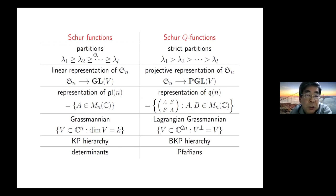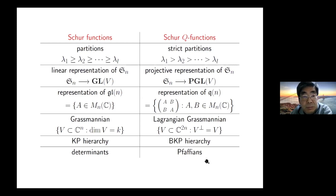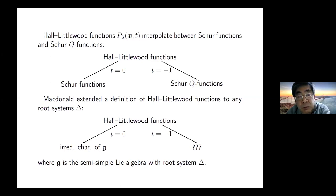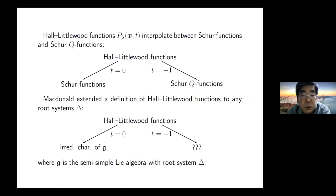The main tool for Schur Functions is the determinant, and the main tool for analyzing Schur's Q Function is the Pfaffian. Both Schur Functions and Schur Q Functions are obtained from the Hall-Littlewood Functions. If the parameter t equals zero, you get the Schur Function. If t equals minus one, you obtain Schur's Q Function or Schur's P Function.